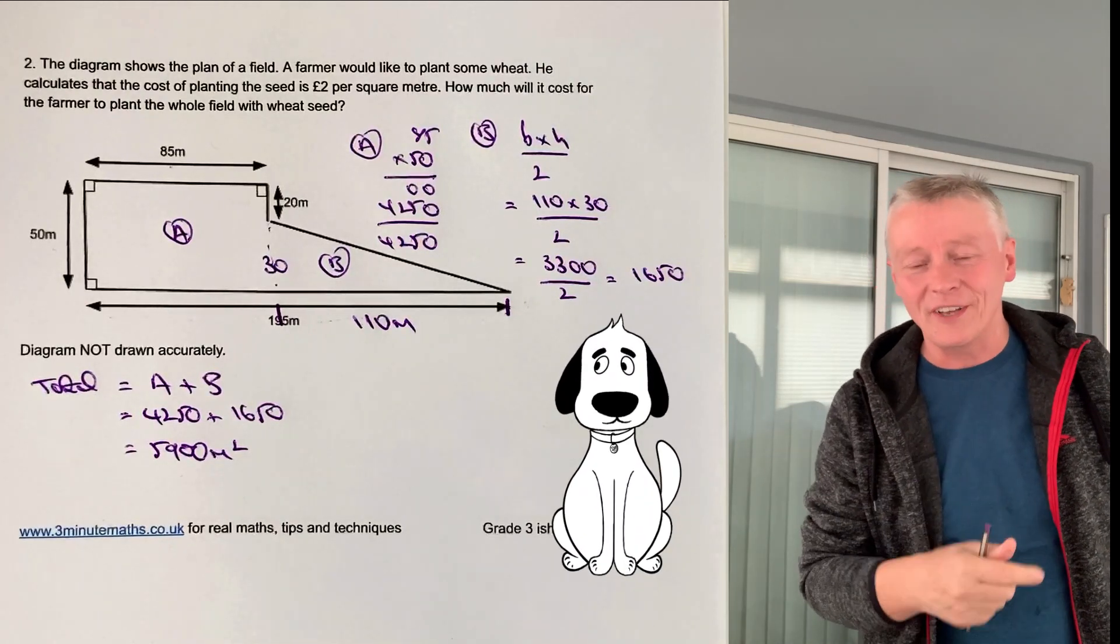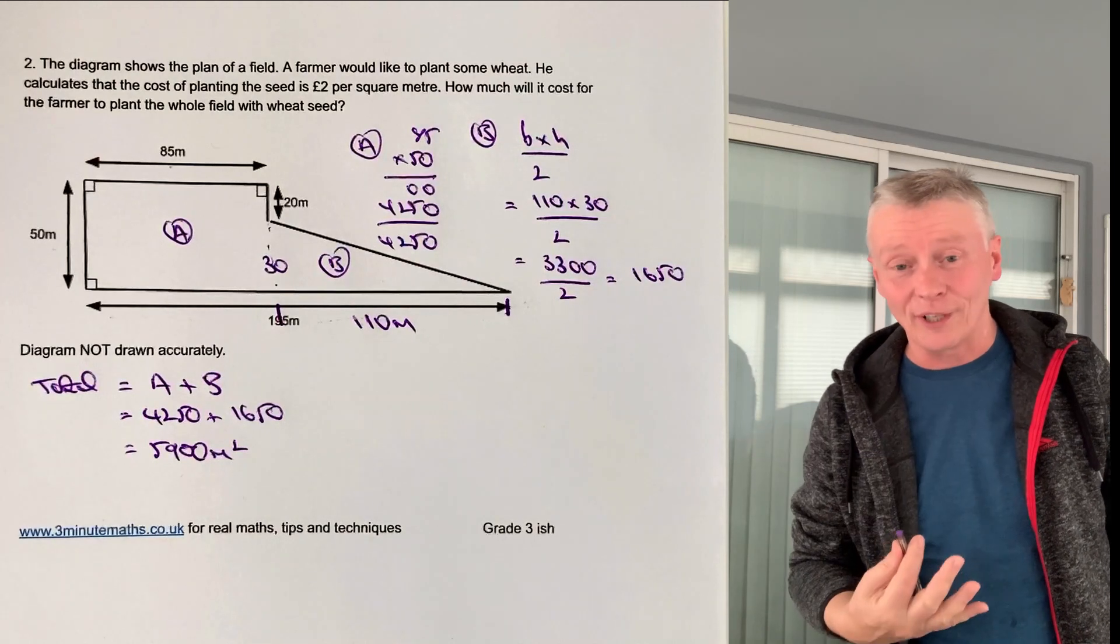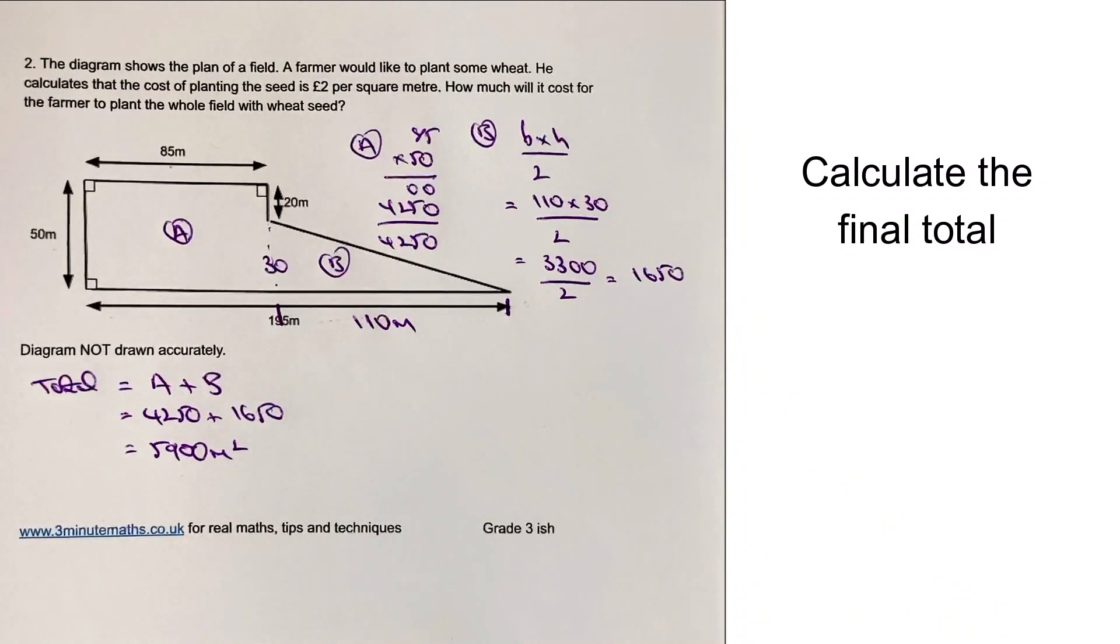We're going to multiply it by two pounds, and that will give us the total amount of spend. Let's have a look at that calculation.